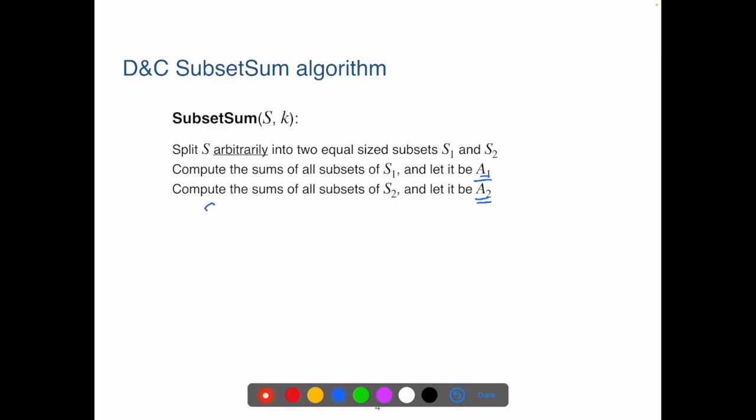For instance, if S is 1, 2, 3, 4, 5, 6, and then we can randomly split S into two subsets. And then we create two new sets, A1, where A1 has all the sums of subsets of S1. So we have 2, 4, 5, that's when a subset has only one item. We could also have 2 plus 4, that's 6, 4 plus 5, that's 9, 2 plus 5, that's 7. We also have 2 plus 4 plus 5, so that's 11. We could also have the empty set subset, so that'll give us a sum of 0. So that's how we compute A1.